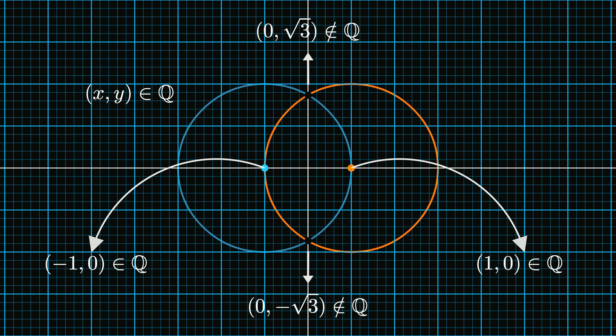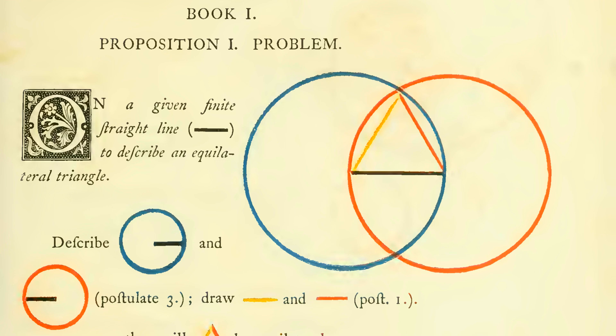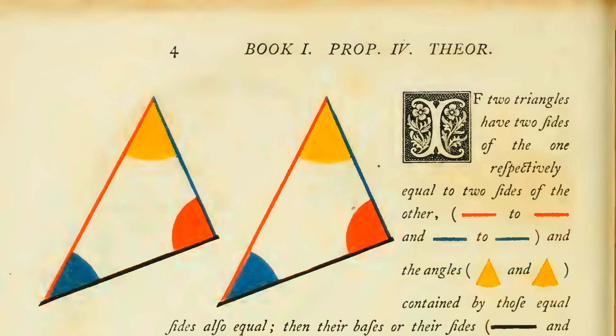Unfortunately, Euclid fails to do this. The mistakes in the elements are not limited to proposition one. Another faulty one is the proof of proposition four.